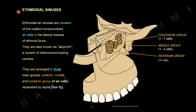Ethmoidal sinuses. Ethmoidal air sinuses are clusters of thin-walled, honeycombed air cells in the lateral masses of the ethmoid bone, also known as the labyrinth — a system of intercommunicating cavities. They are arranged in three main groups — anterior, middle, and posterior — separated by septa. The anterior group consists of about 11 air cells, the middle group about 1 to 3 air cells, and the posterior group about 1 to 7 air cells.